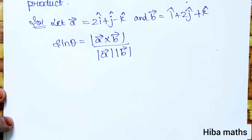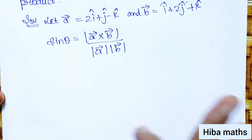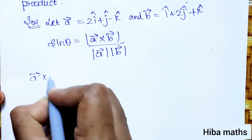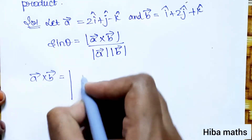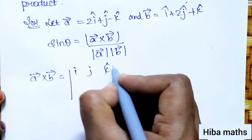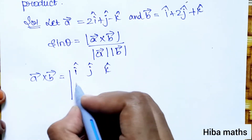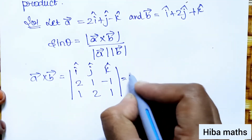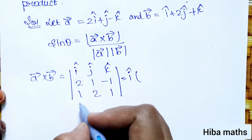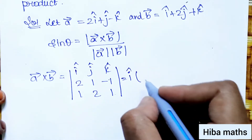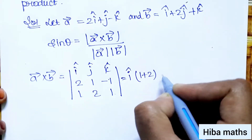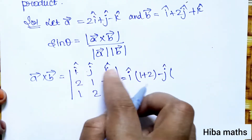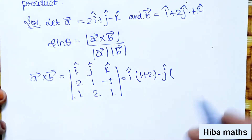For cross product, note that sin uses cross product while cos uses dot product. Now a cross b is computed using the matrix format with i, j, k. The a vector values are 2, 1, minus 1 and b vector values are 1, 2, 1. Solving: i into (1 plus 2), minus j into (2 minus 1).